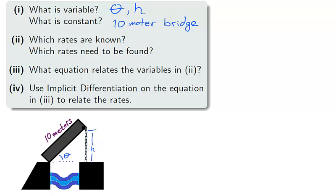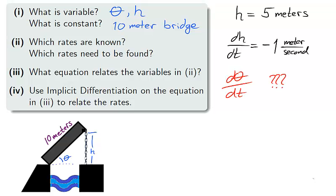Our second question, which rates are known and which rates need to be found? When h is equal to 5 meters, the rate dh over dt is negative 1 meters per second. So we have one rate that's known, dh over dt, and we have a second rate that needs to be found, d theta dt, the rate of change of theta with respect to time.